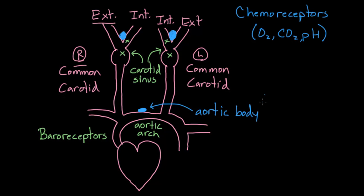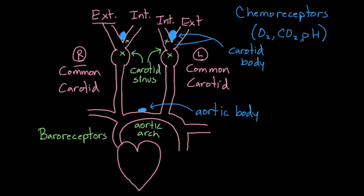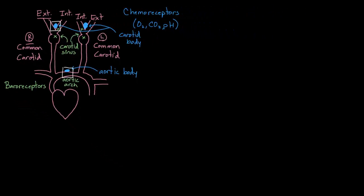We call them the aortic body and the carotid body. The reason we use the term 'body' is that it's a body of tissue — that's why that word gets used. And this is actually in a slightly different location and certainly has a different job. So let me blow up some of these regions and show you close up what this might look like.